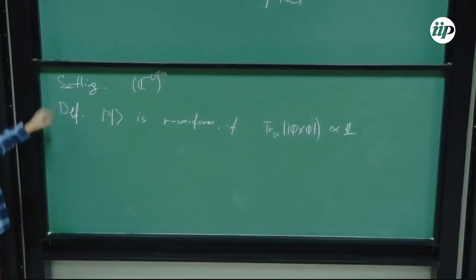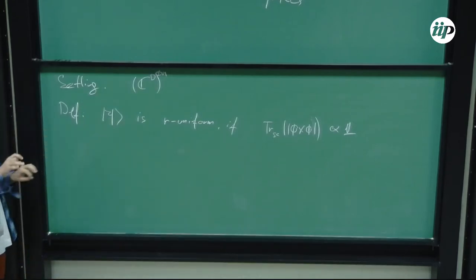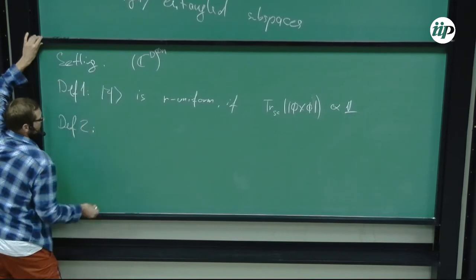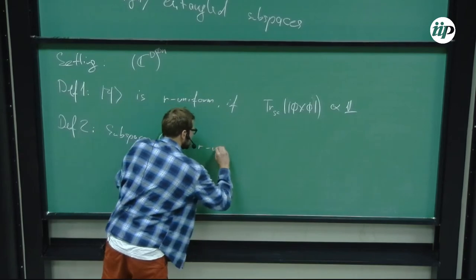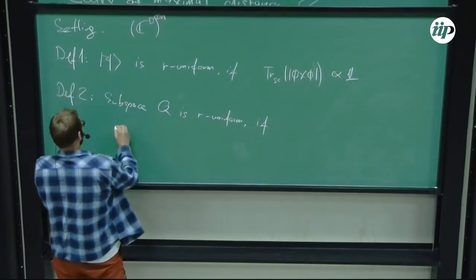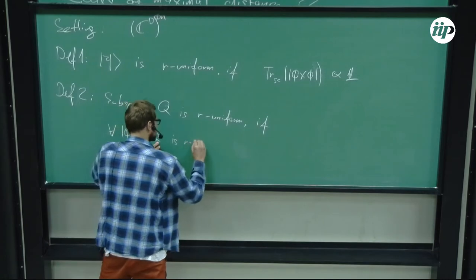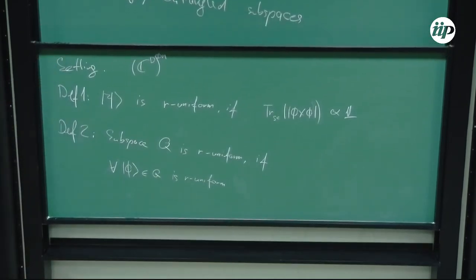A vector Psi is R-uniform if every marginal of size R is maximally mixed — so if the trace is proportional to the identity. This means there's always maximal entanglement present between any R subsystems and the rest. Then there's a second definition: a subspace Q is R-uniform if, for every vector phi in Q, phi is R-uniform. So every vector in the subspace has the property of being maximally entangled between R parties and the rest.